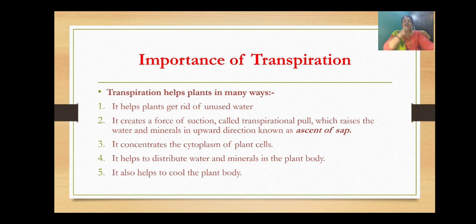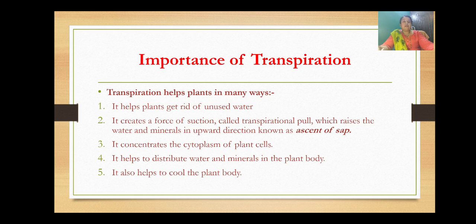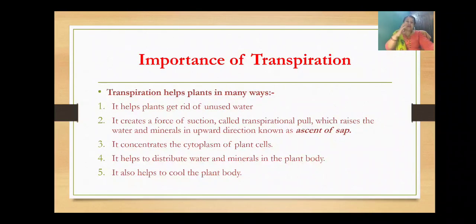Transpiration helps the plants in many ways. First, it helps plants get rid of unused water — extra water which is not used is released through transpiration. Second, it creates a suction force also known as transpirational pull, which raises the water and minerals upward — this is known as ascent of sap. Ascent of sap is the upward conduction of water and minerals by the xylem tissue, driven by the transpirational pull.